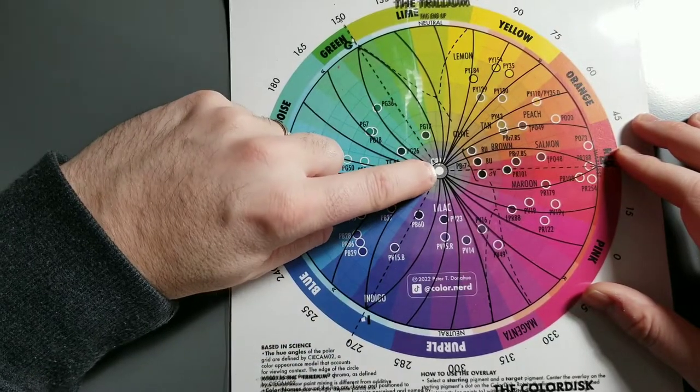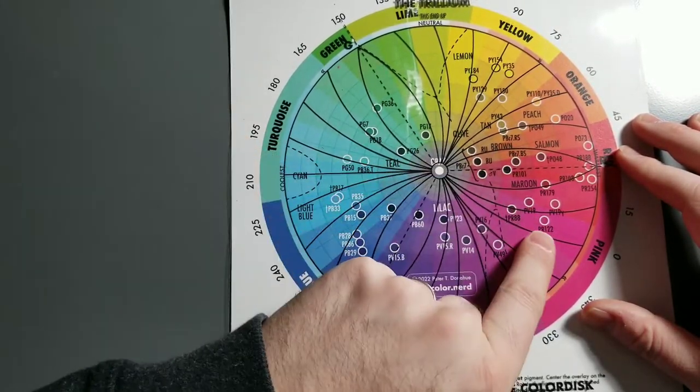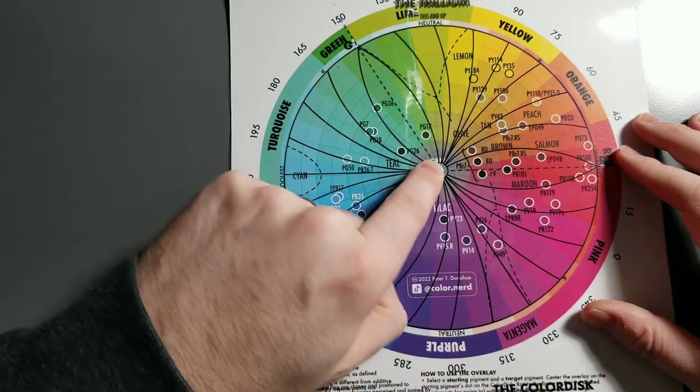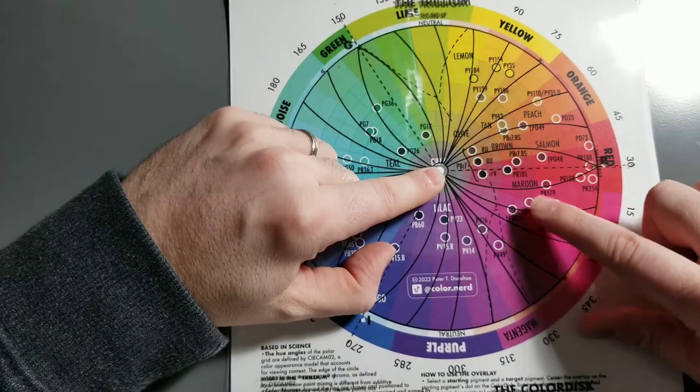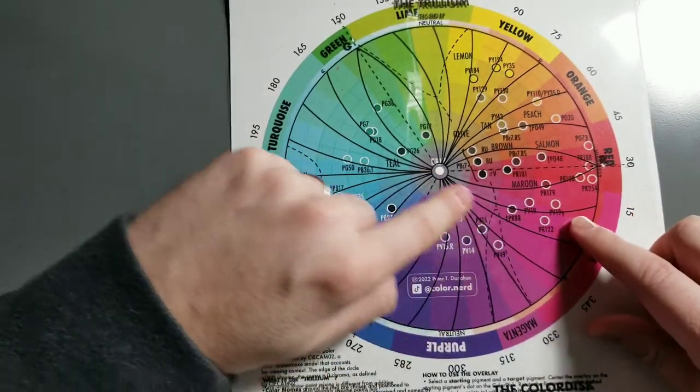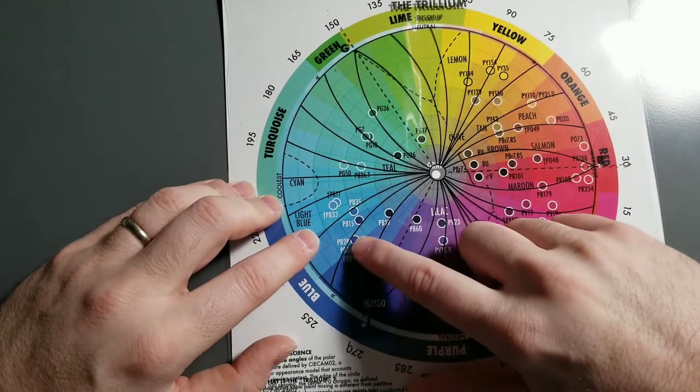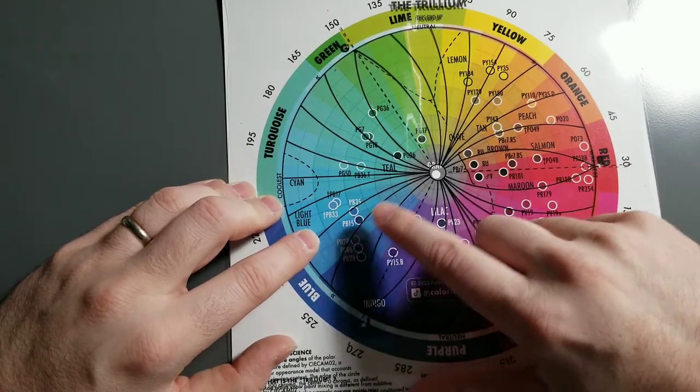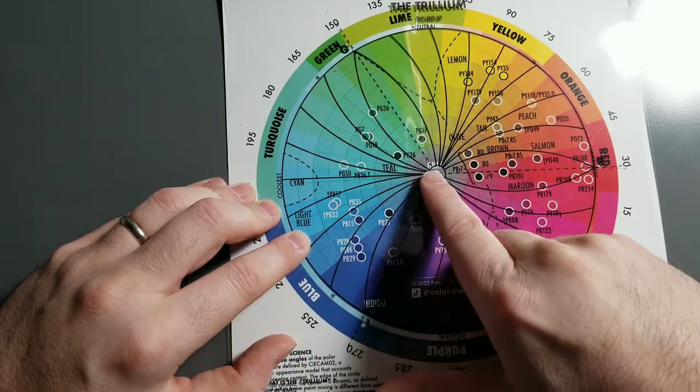If you center this, it's showing you what's going to happen if I mix any pigment with white. So PR122, quinacridone magenta, if I mix it with white, it's curving this way. And that's true. It will actually shift in hue toward purple as you add white to it. Another example over here, if you mix cobalt blue or phthalo blue or any of these blues with white, it will actually shift in hue and push it toward cyan.